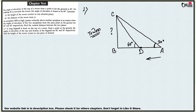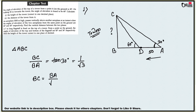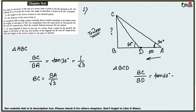Here DA equals 50 meters, because on walking 50 meters towards the tower, DA equals 50 meters. From the first triangle ABC — the bigger one — BC by BA equals tan 30 degrees, and the value of tan 30 is 1 over root 3. So BC equals BA by root 3. Now for the next triangle BCD, BC by BD equals tan 60 degrees, which equals root 3. So BC equals BD times root 3.